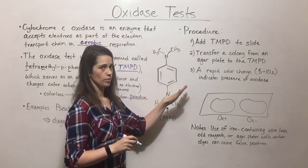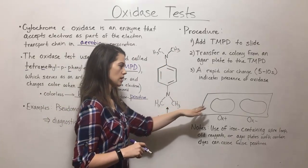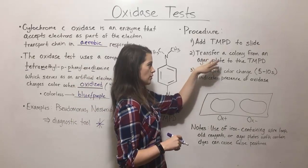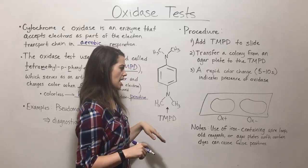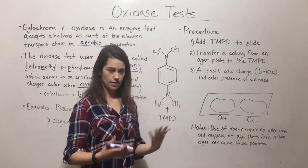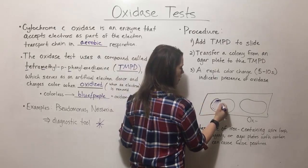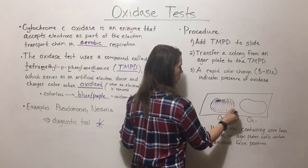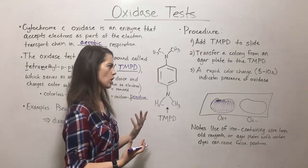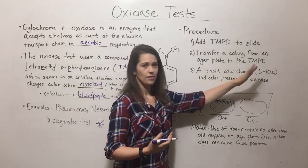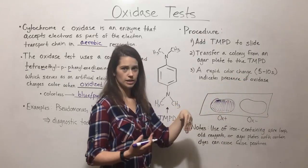Now let's talk about the procedure for the oxidase test. You add the test solution — the TMPD — to a slide, and then transfer a colony from an agar plate into this TMPD. If the bacteria in that colony is oxidase positive, you're going to see a rapid color change from colorless to blue or purple. This color change is very quick — five to ten seconds — and that indicates the presence of oxidase, giving an oxidase-positive result.